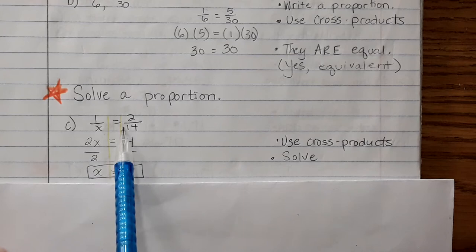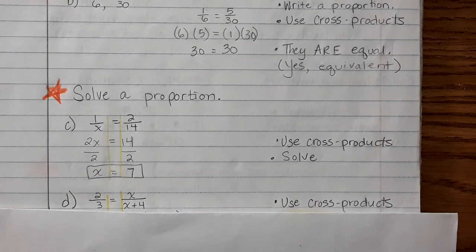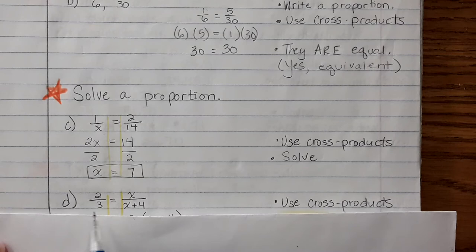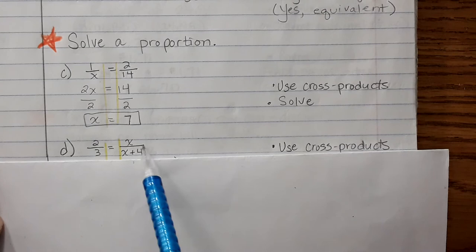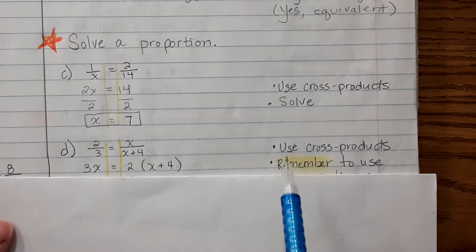Here is example D: 2 thirds equals x over x plus 4. Here are my two ratios set equal to each other. That makes it a proportion. This is more of the algebra level of a proportion to solve. We're going to use cross products. Now be careful because when you multiply, please remember to use parentheses.